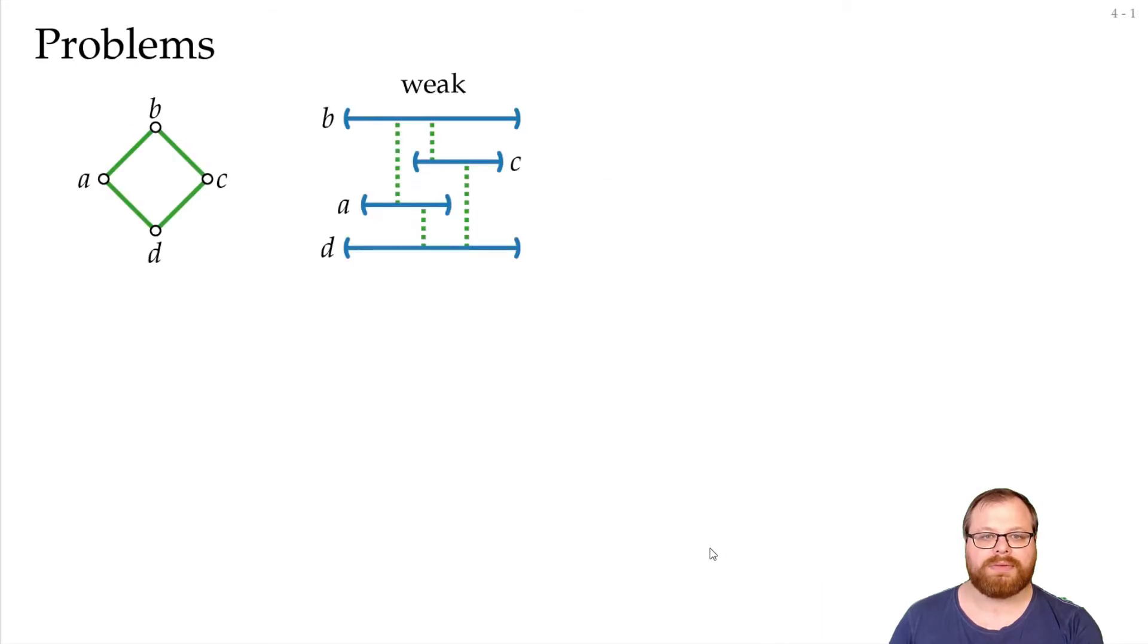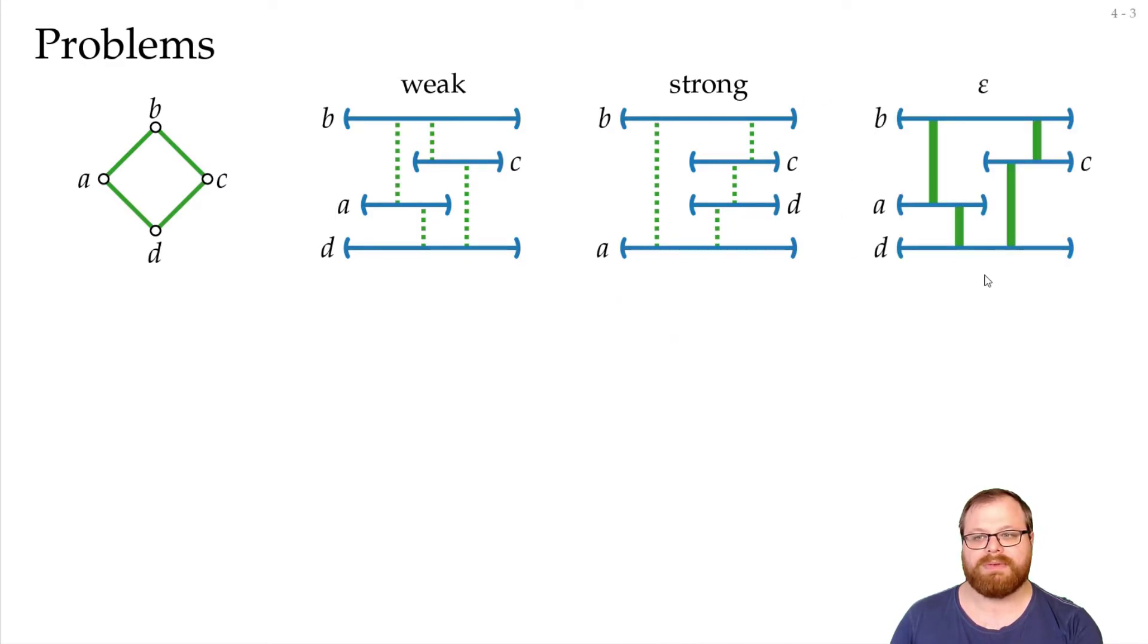So we have three models. We have the weak where we can have more visibilities than in the graph. The strong where we have if and only if and we can have zero width visibility. And epsilon where we have if and only if but we have wider visibility. Note that in the representation we don't have these sightlines we only have these bars. But most of the time we will keep them for clarity.